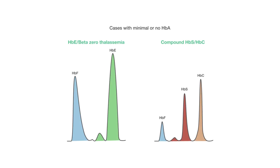If there is no hemoglobin A and therefore no hemoglobin A1c in a sample, it does not make sense to test for hemoglobin A1c using immunoassay, enzymatic, boronate affinity, or any other methods. Any reported hemoglobin A1c value will be clinically wrong.